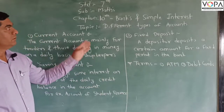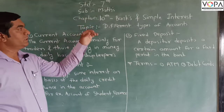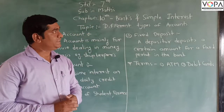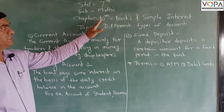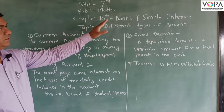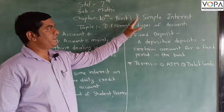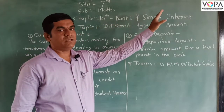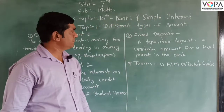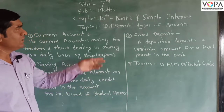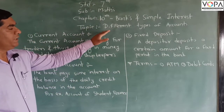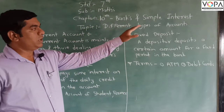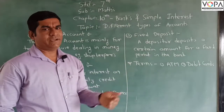Good morning everyone. Today our Sunday is the Remask and the chapter is the 10th Banks and the Simple Interest. The topic is different types of accounts in a bank.